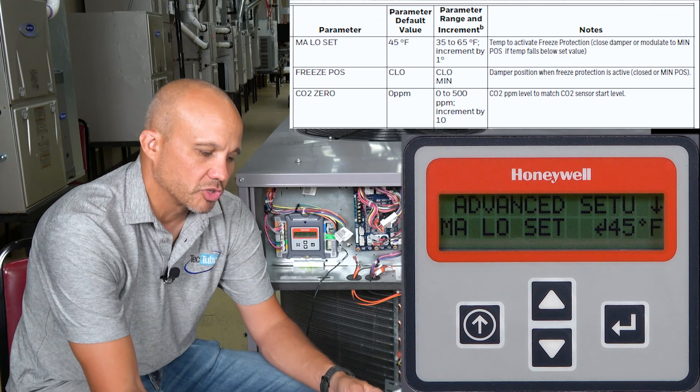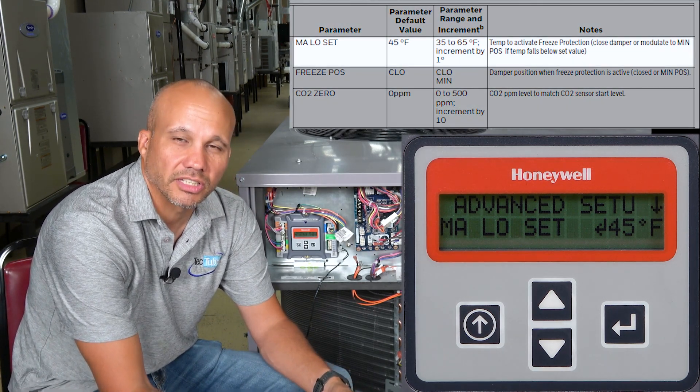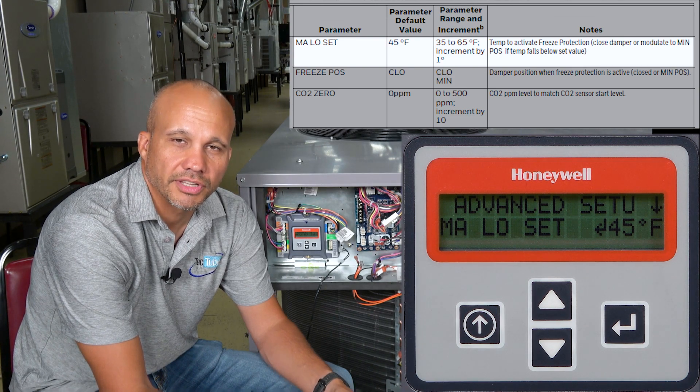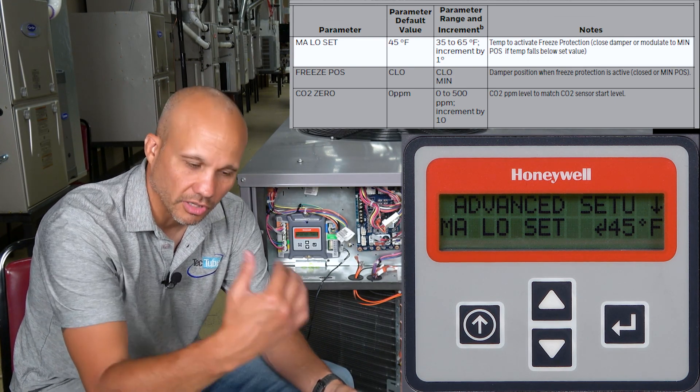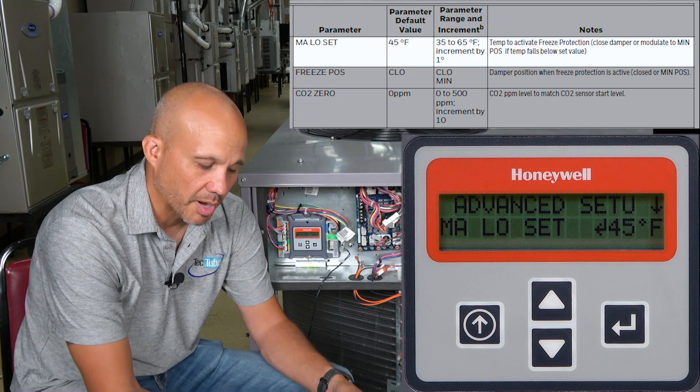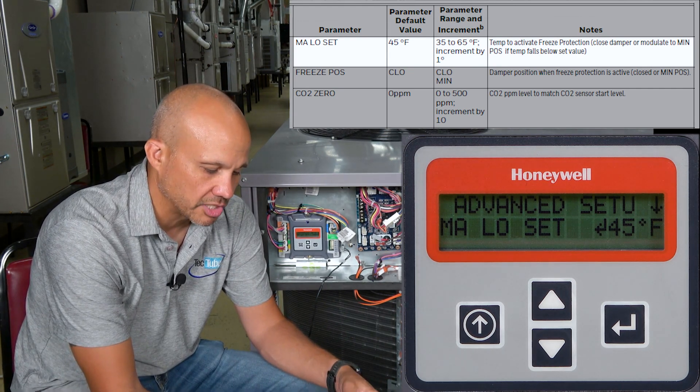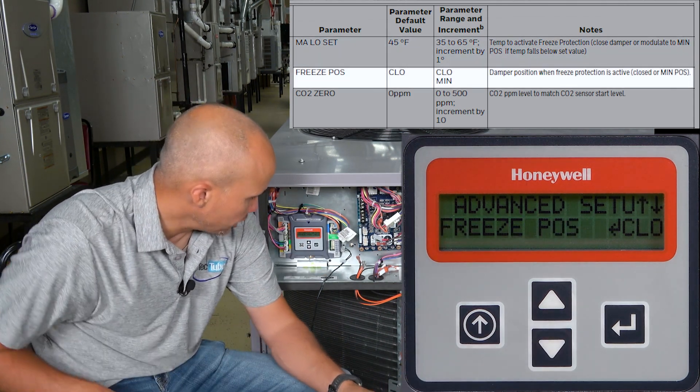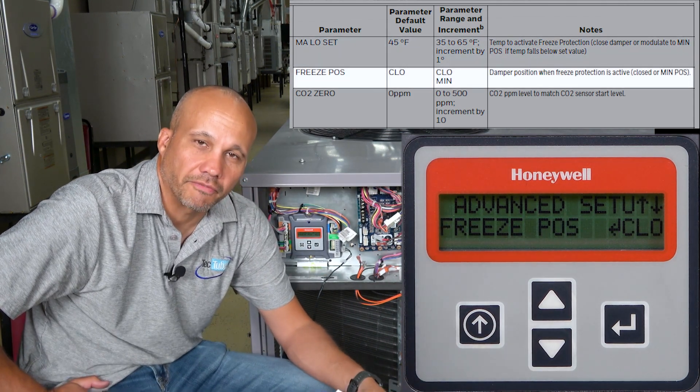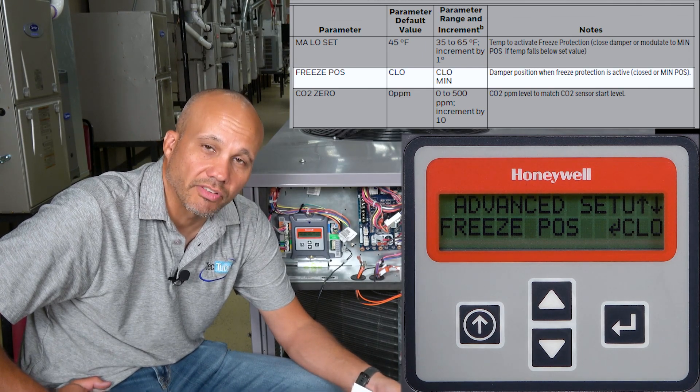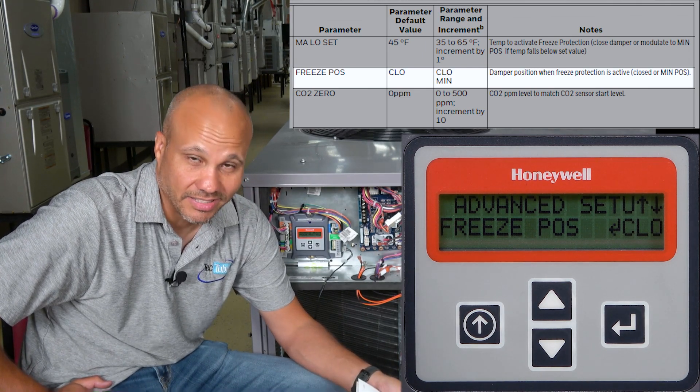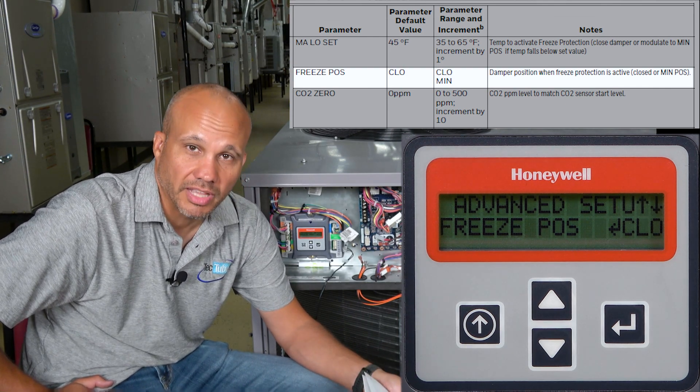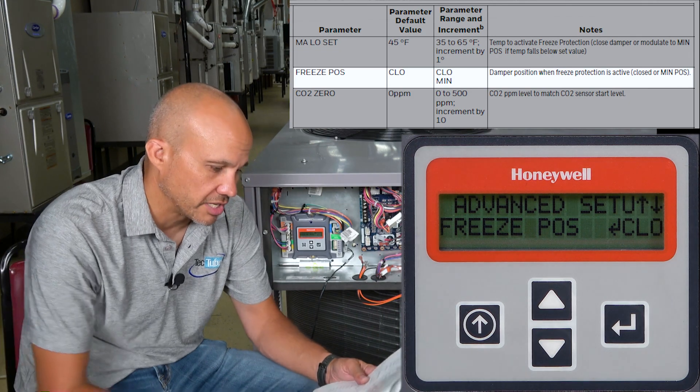The first one is mixed air temperature low limit. This is basically a mixed air temperature freeze stat. The default is 45 degrees. If it's below 45 degrees, it's going to assume there's a freeze condition and it's going to go ahead and start closing that damper off. That's probably a pretty decent number. If you scroll down one, freeze position close. So if I get below 45, close the damper. If you want to, you can have it go to the minimum when it's below 45.